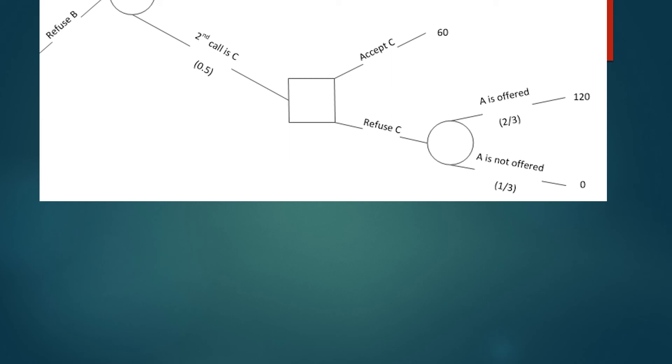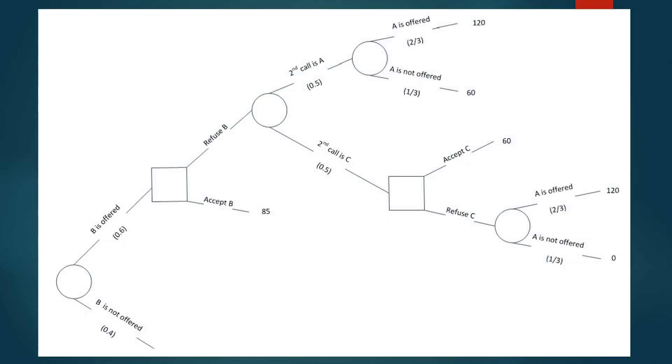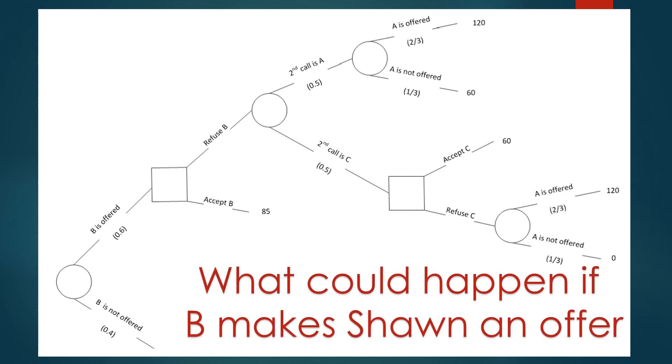If he's not offered the job though, which happens one-third of the time, his payoff this time is going to be zero. Why? Because he's refused two jobs, and the third job, the one that he really wanted, wasn't offered to him. He ends up with no job at all. So if you put all this together, you end up with our upper half of the tree, which looks like this. This tells you what's going to happen, what could happen, if B does make the call and is offering him the job to begin with. We have the other half of the tree to build. What's it going to look like if B doesn't offer the job?